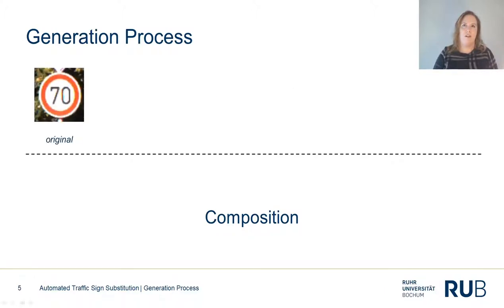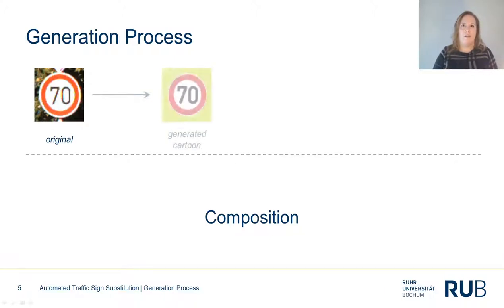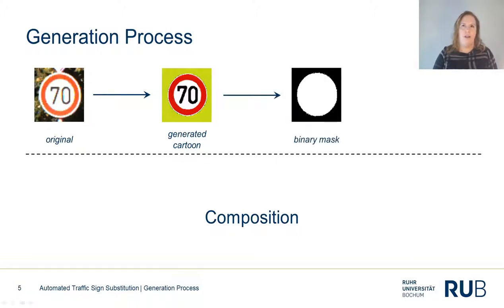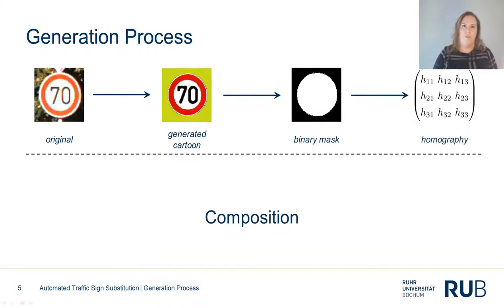The extraction process starts with a sample from the GTSRB. The category of the depicted traffic sign should match the substitute — if we want to generate a restriction sign, we need a random restriction sign sample to replace for best results. We let the CycleGAN transfer the given sample into its cartoon representation, making it much easier to extract the necessary information for later steps. From the cartoon image, we can extract the binary mask separating foreground and background. With the help of this mask, along with a rectified pictogram of the original traffic sign, we can calculate the homography required to give the substitute the correct perspective.